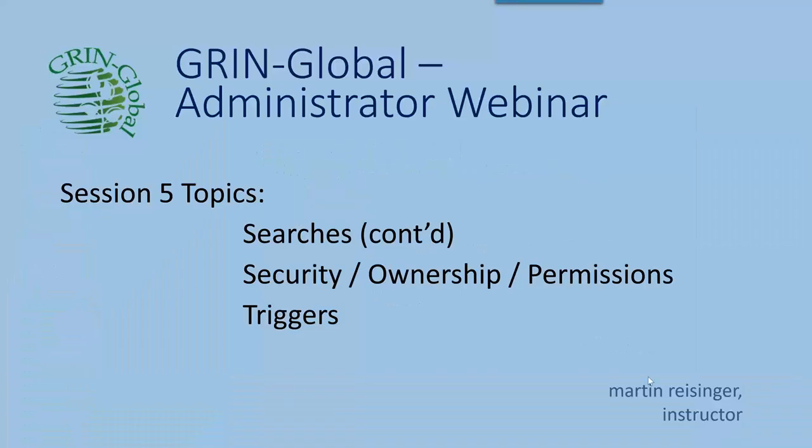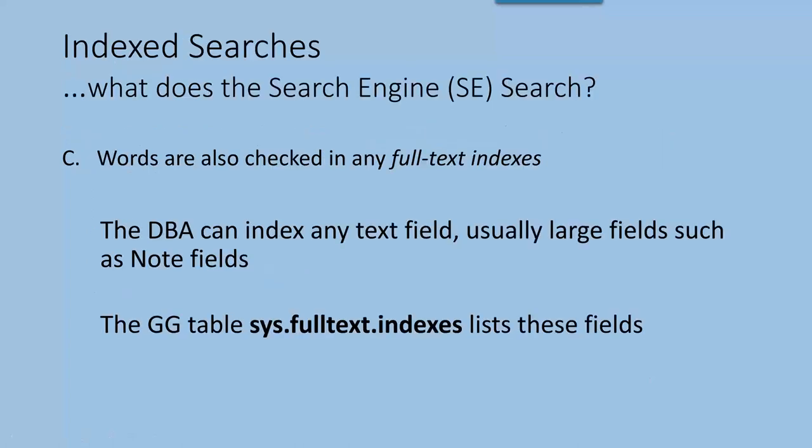When we were talking about searches last week, we were saying how the search engine checks for different things — really pay attention to those couple of slides in session four. One of the things I mentioned was that if you're in a list search and you have four pieces of text, four tokens of text, it assumes that's an inventory ID because it's made of four parts.